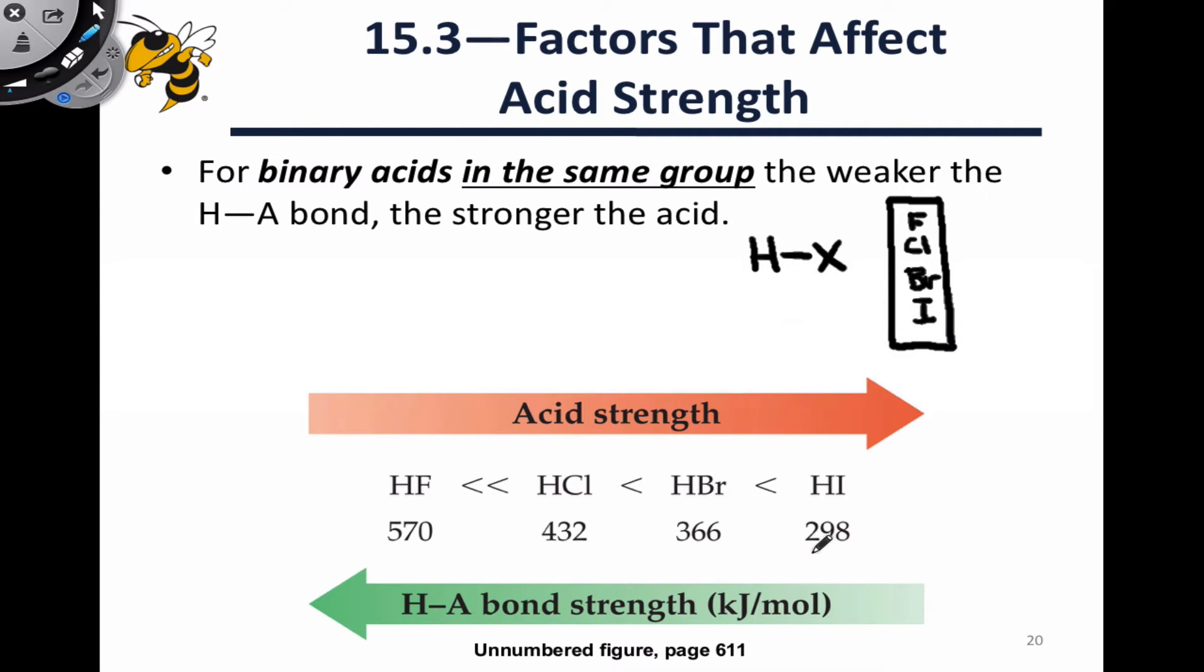If we look at the trend here, we can notice that as the HA bond strength increases from right to left, the acid strength decreases. The weakest acid, HF, is associated with the strongest bond strength, that is the highest bond enthalpy. It takes the most energy to pull apart H and F. On the other side of the scale, we have HI, which takes the smallest amount of energy to pull apart the two atoms. It's got the lowest bond enthalpy, that's the weakest HA bond, but it's the strongest acid of the group. There's an inverse correlation here. The weaker the HA bond, the stronger the acid.